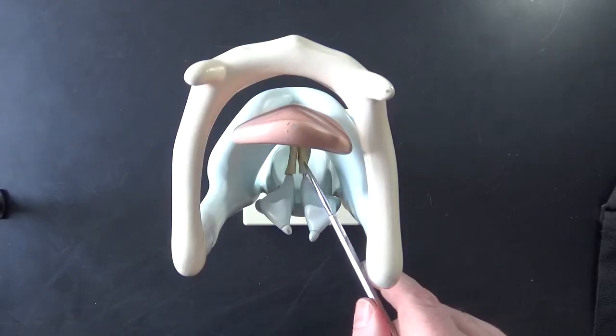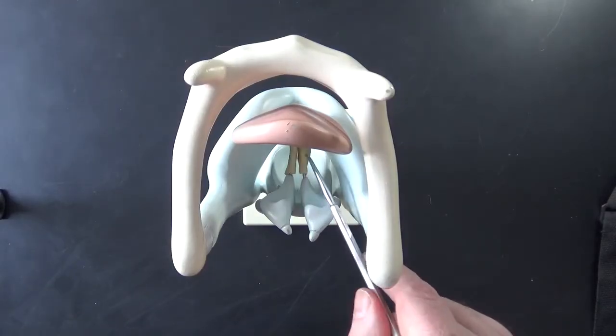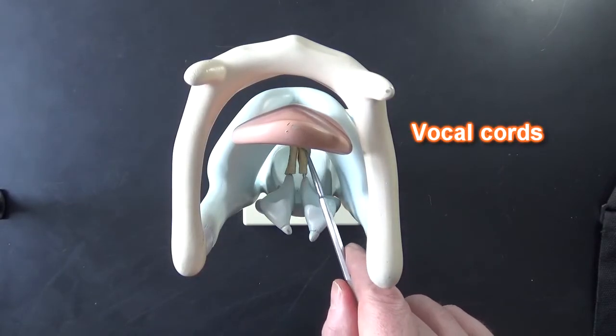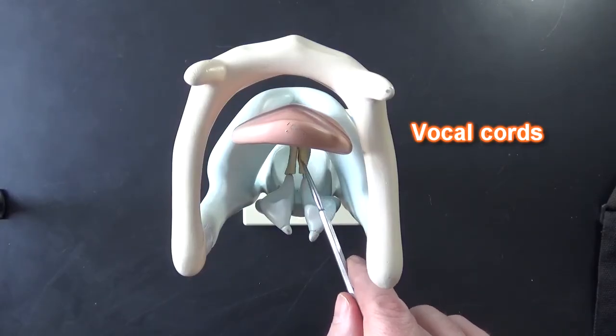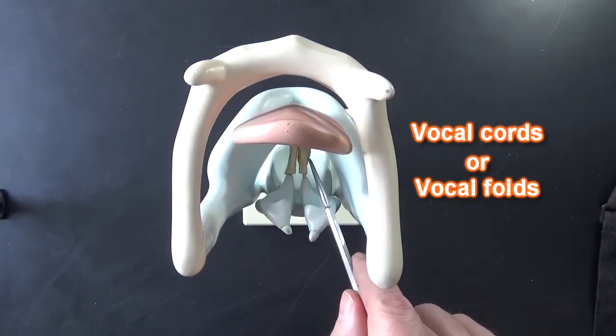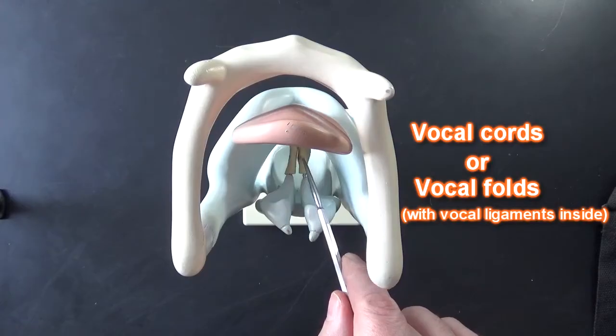Here you can see the arytenoid cartilages have the vocal cords attached and these are membranes that fold over the vocal cords so we call those vocal folds oftentimes.